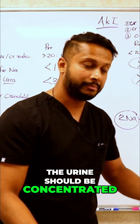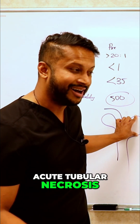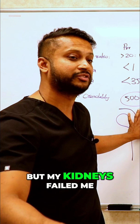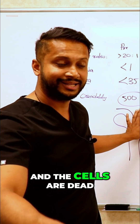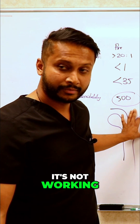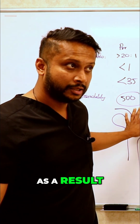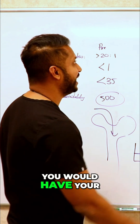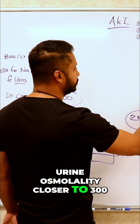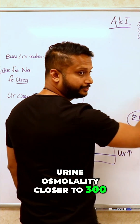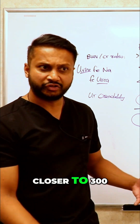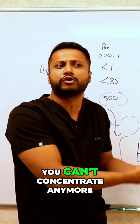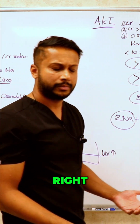When you have acute tubular necrosis, you are thirsty, you are dehydrated, you are drinking water — but your kidney has failed and the cells are dead, it's not working. As a result, you will fail to concentrate the urine. So your urine osmolality would be closer to 300, which means less than 500, because you can't concentrate anymore.